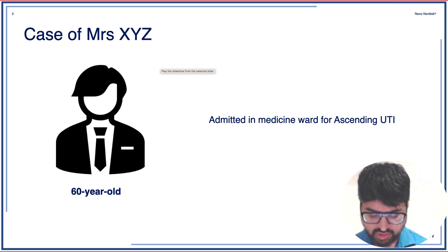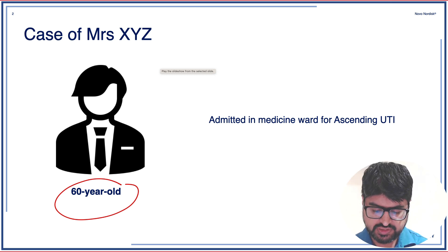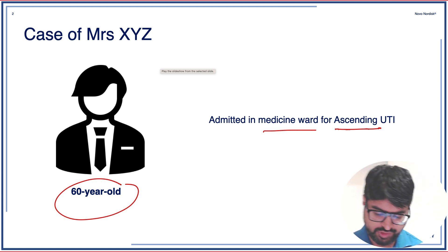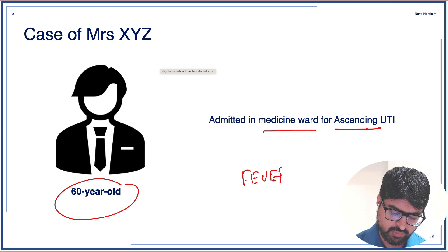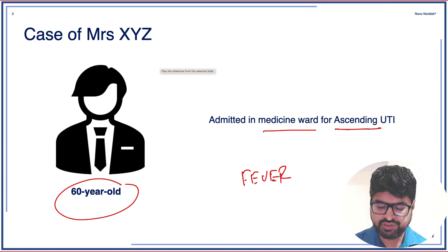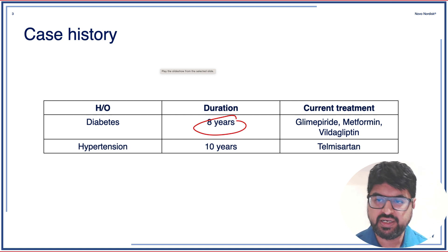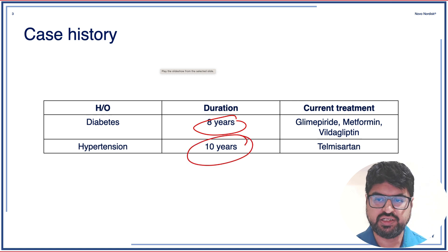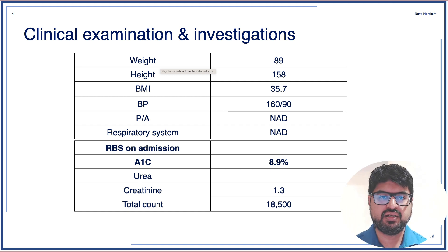We are going to discuss a real-life case of a 60-year-old female. This patient was admitted to the endocrine ward with the complaint of ascending UTI, presenting with fever, burning micturition. The patient has a history of diabetes for the last eight years and is on glimepiride, metformin, and vildagliptin. She also has hypertension for the last 10 years and is on telmisartan.